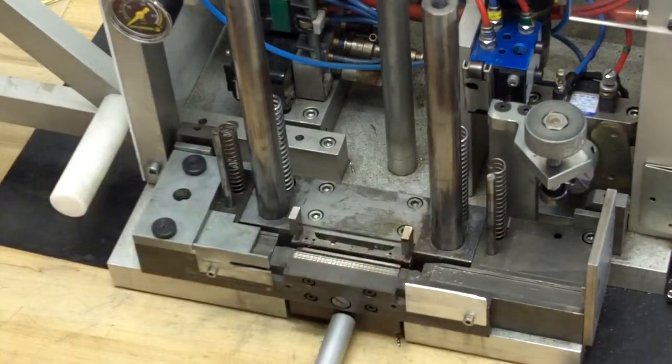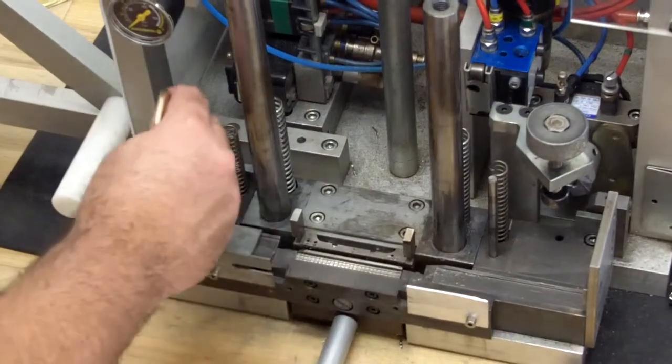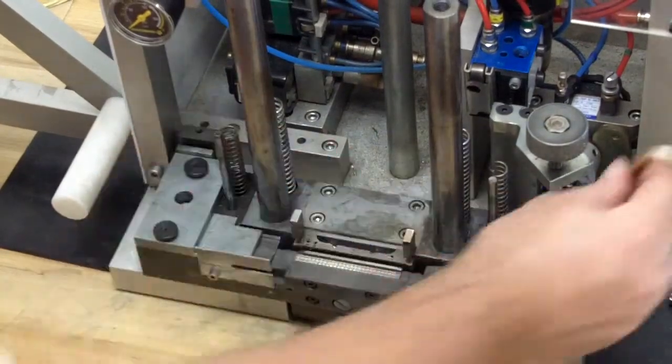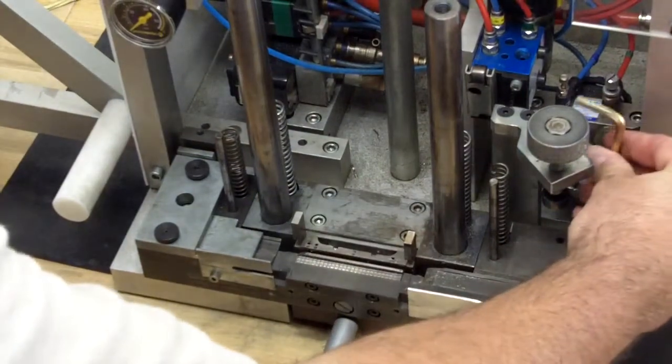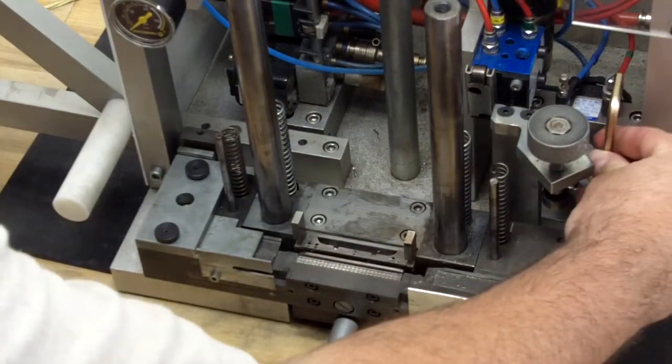Slide the base of the machine back against the shims. Lightly drive the bolts down until they start to grab.